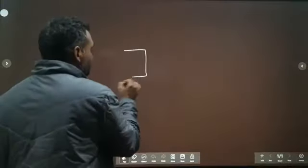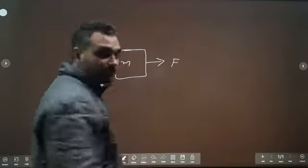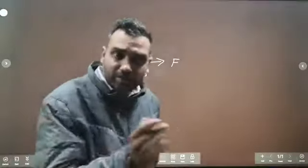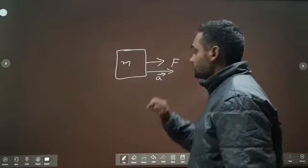We will define one Newton force. Consider a body of mass M on which a force F is being applied by us. This means we are trying to pull it and it is being pulled in this direction.